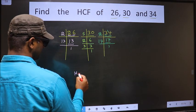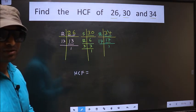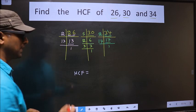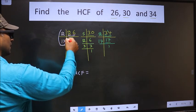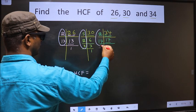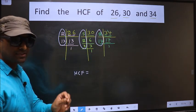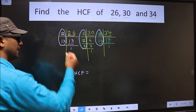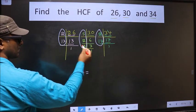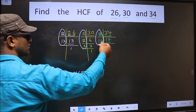Now our HCF is. HCF is the product of numbers which should be present over here, and here, and also here. I repeat, HCF is the product of numbers which should be present in all the 3 places. That is here, here, and also here.